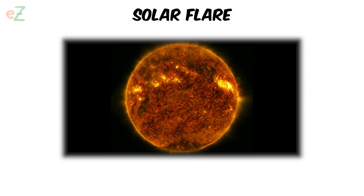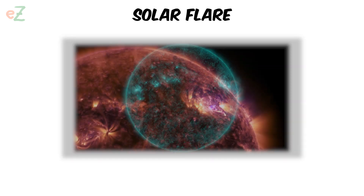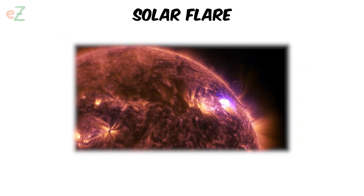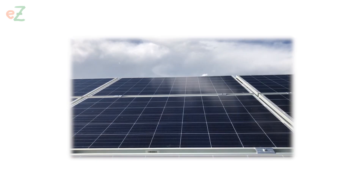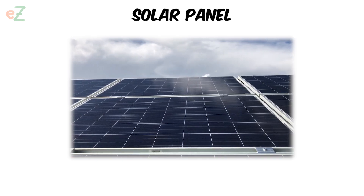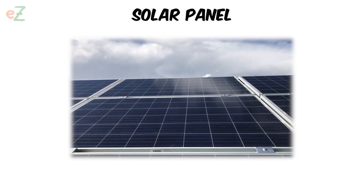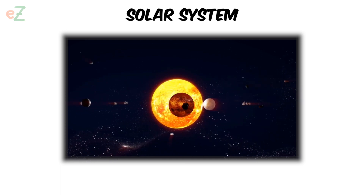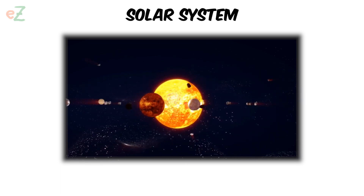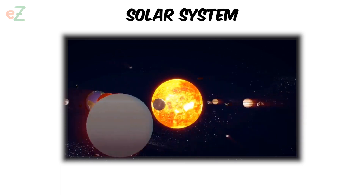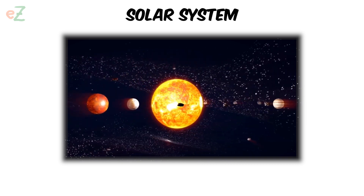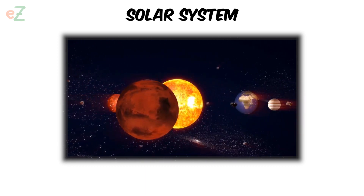Solar flare. A burst of energy and particles from the sun. It releases gases, radiation waves, and magnetic storms. Solar panel. A piece of material that can capture sunlight and turn it into electricity. Solar system. A set that includes a star and all of the matter that orbits it, including planets, moons, asteroids, comets, and other objects.